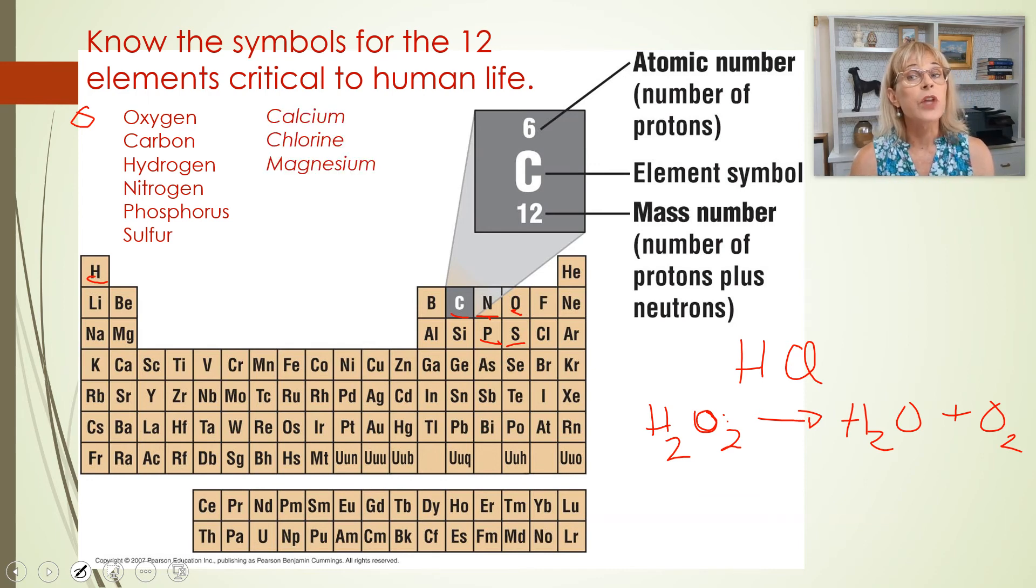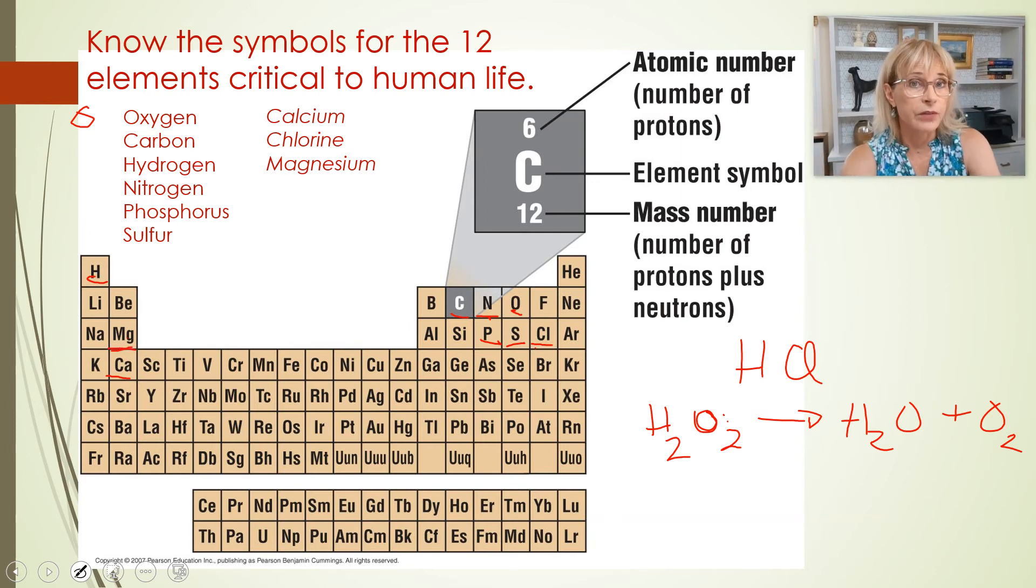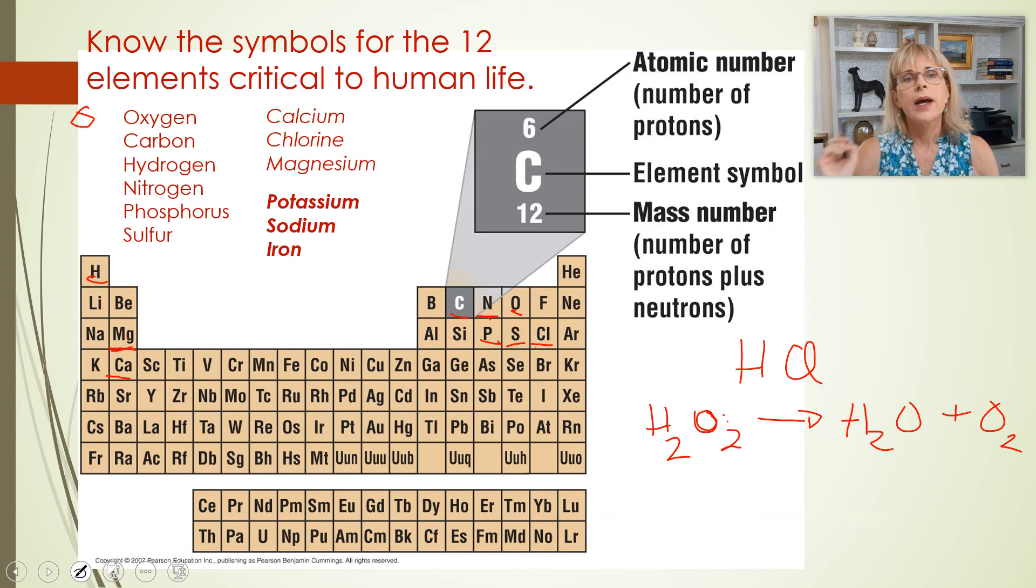Now the next three, they're pretty easy: calcium, chlorine, and magnesium. Clearly the letter C got used, and since the letter C got used, we needed a different abbreviation for calcium. Calcium is Ca, and chlorine is Cl—that's simple. Now magnesium, for reasons I do not understand, is Mg. Not that that's a bad abbreviation; I like that abbreviation very much. It's just that there is no element that uses just the letter M, so it just seems like they should have used the letter M, but they didn't.